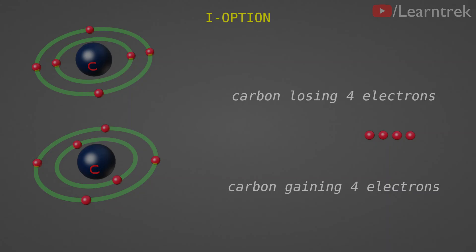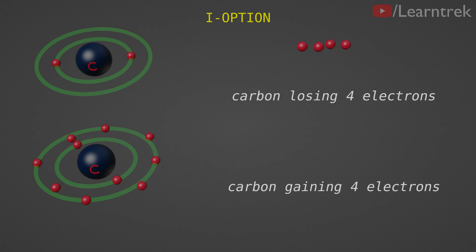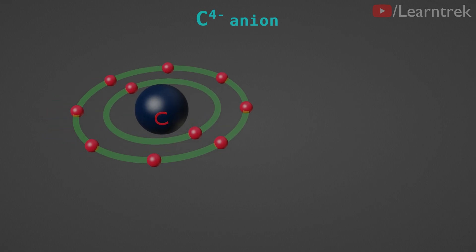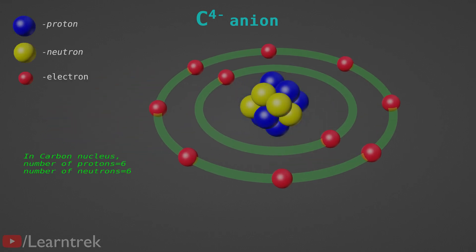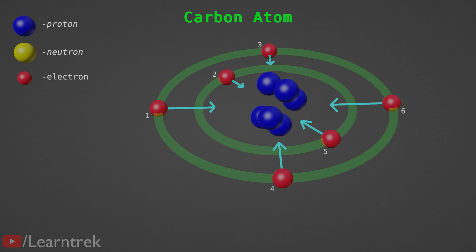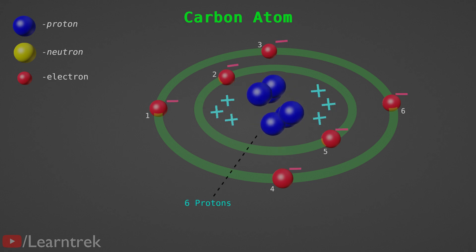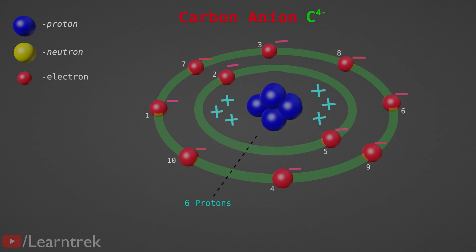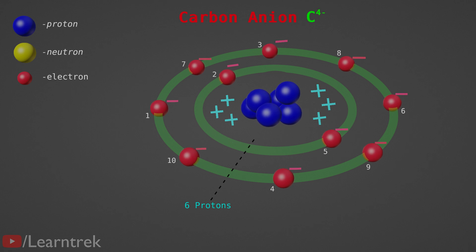Let's talk about the first option in brief. If carbon is going to lose or gain valence shell electrons, then it could gain 4 electrons to become a C4- anion. But it would be difficult for the small nucleus with 6 protons to hold 10 electrons. Six protons in the nucleus hold 6 electrons due to attraction between positively charged protons and negatively charged electrons. But when 4 extra electrons are added, the balance between protons and electrons gets disturbed, and it becomes very difficult for 6 protons to hold 10 electrons.